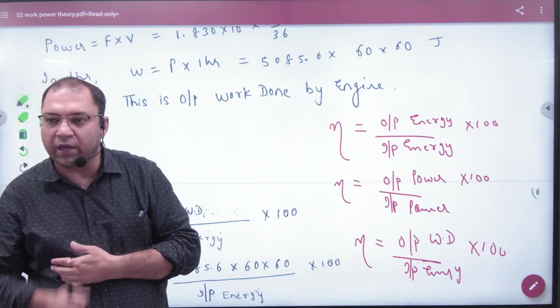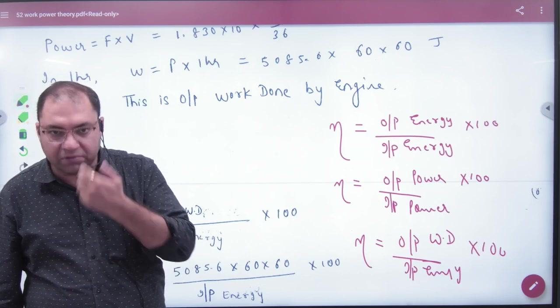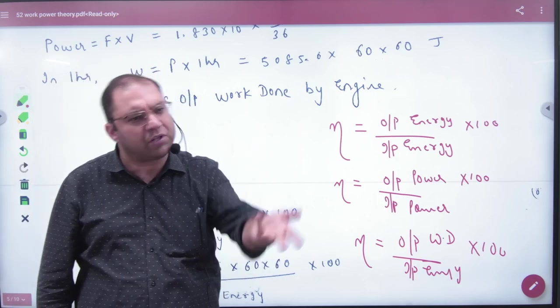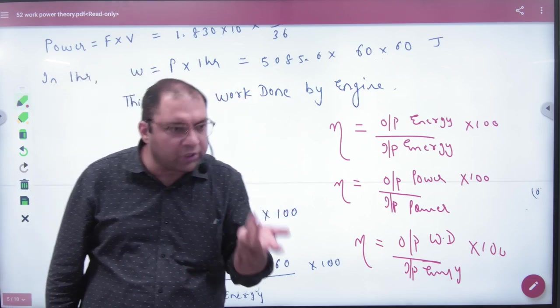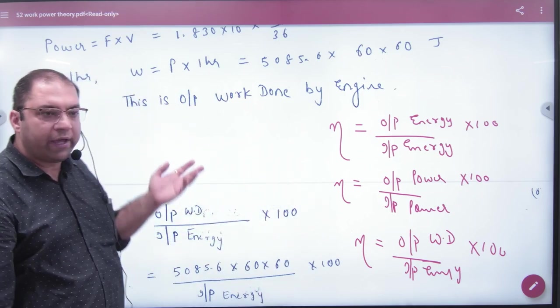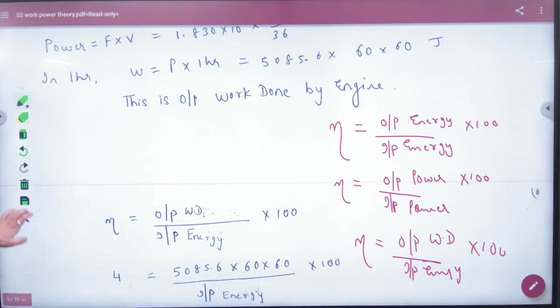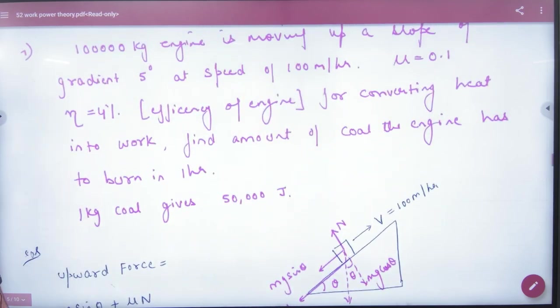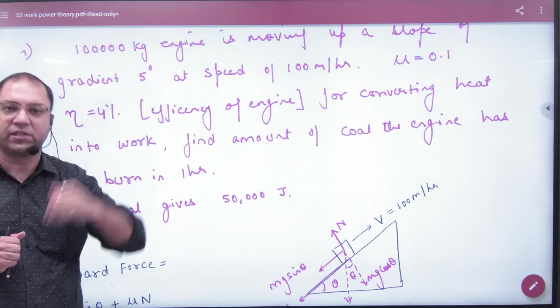In this engine case, the engine is taking energy - from what source? The engine needs fuel, and in this case the fuel is coal. The engine has to burn coal to convert heat into work and lift itself up the slope for one hour.